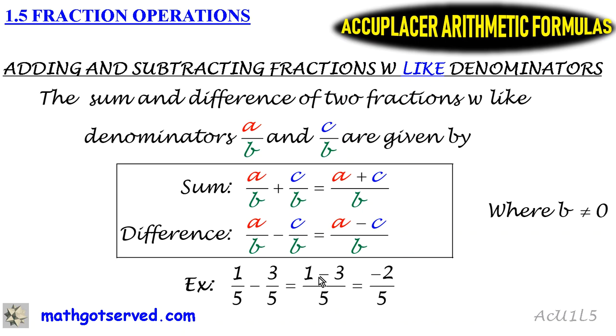So one minus three - if you notice they have different signs, we talked about this in previous formulas - when you're subtracting numbers with different signs, you subtract the numbers and keep the sign of the greater. So one minus three, you subtract one from three, and then you keep the negative sign because the bigger number is negative.